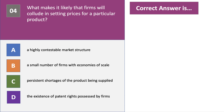So what makes it likely that firms will collude? The right answer is B: a small number of firms with economies of scale. Collusion is all about keeping control of the market — you control the market price by having a small number of firms come together to fix the price, but they need to have a significant share of the market. Economies of scale, of course, give them that.